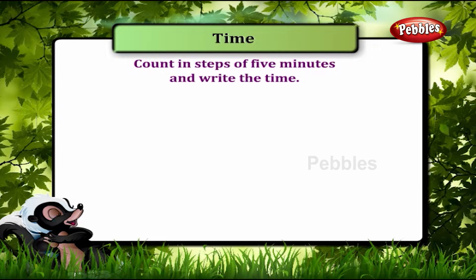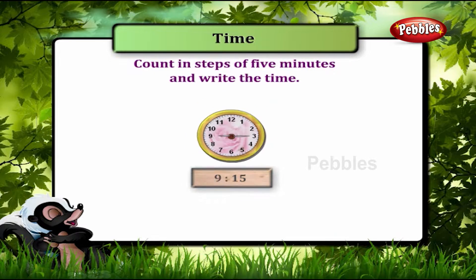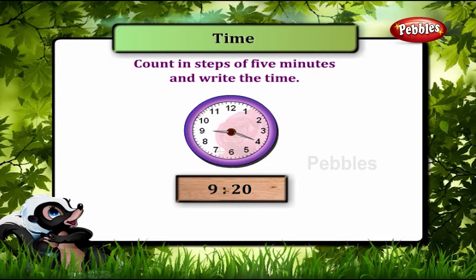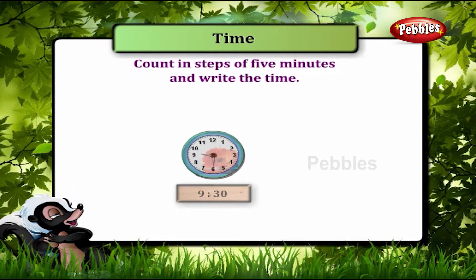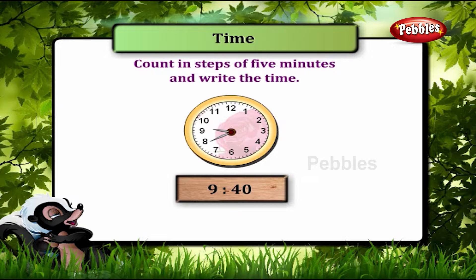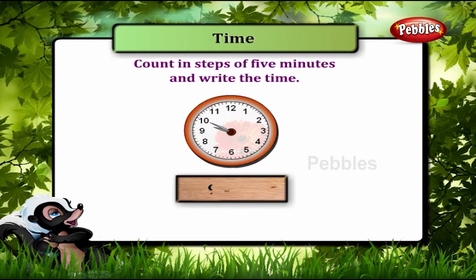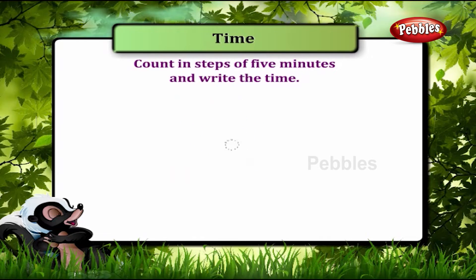Count in steps of 5 minutes and write the time. This shows 9:10, this one 9:15, this one 9:20, 9:25, 9:30, 9:35, 9:40, 9:45, 9:50, 9:55 and 10:00.